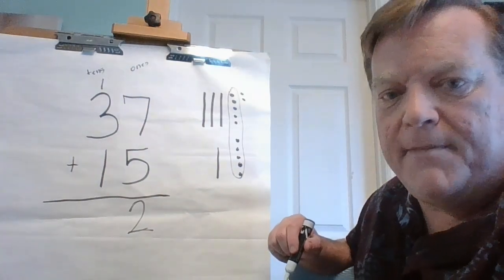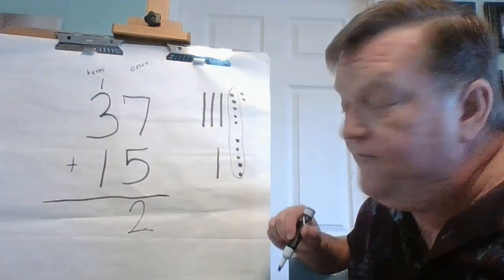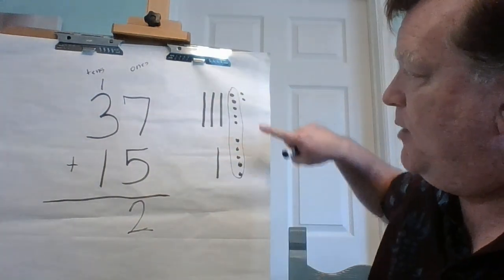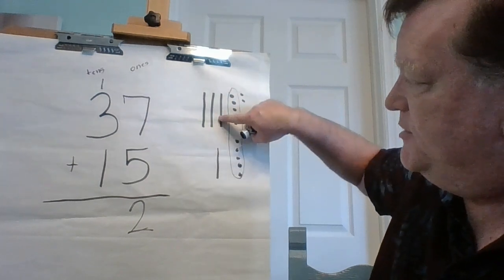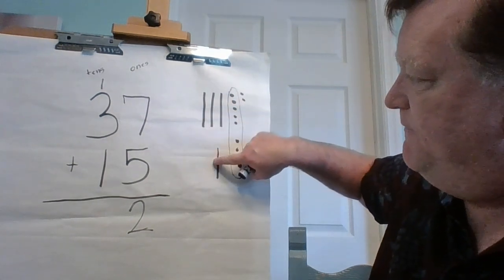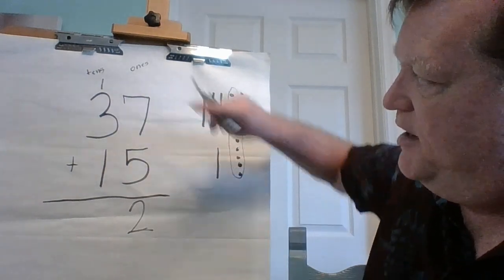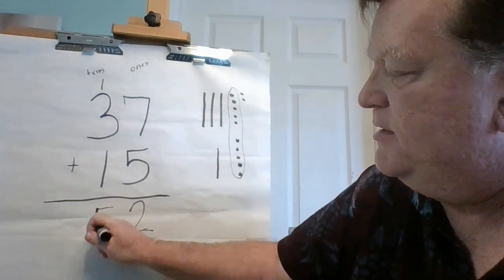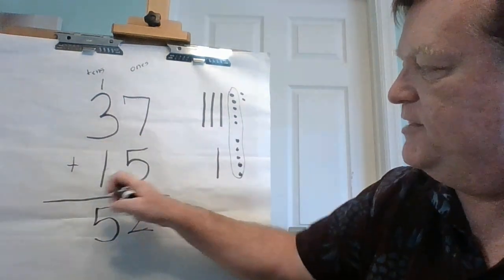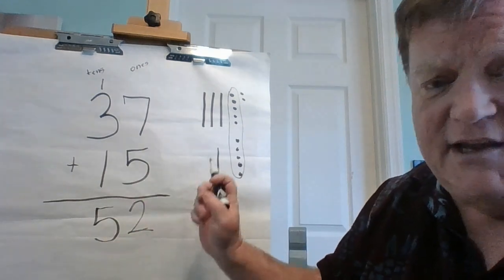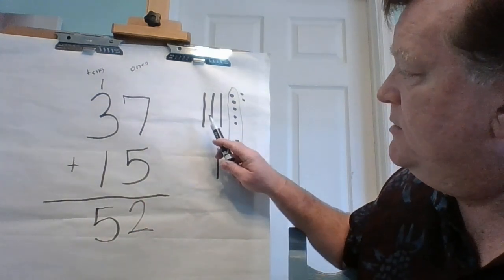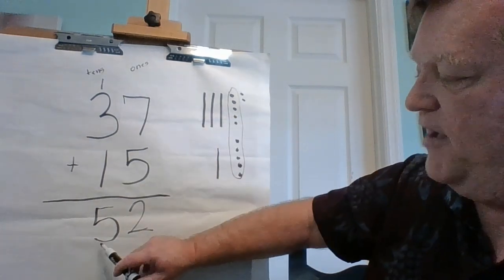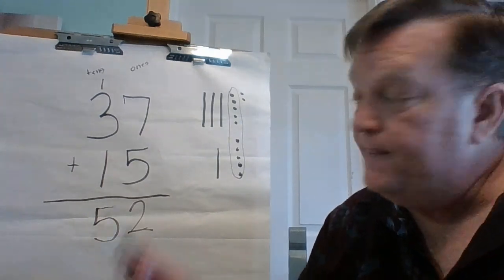Now when I'm adding my tens, I always do the one I just carried first so I don't forget it. One plus three is four, plus one more is five. So 37 plus 15 is 52. Let's check it against our model — we have one, two, three, four, five tens and two ones. Five tens, two ones — that's our first problem.